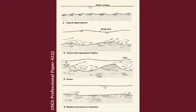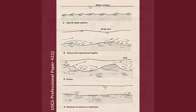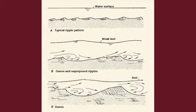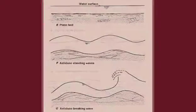In channel flow capable of moving its own bed, the flow interacts with the boundary, producing a type of bed roughness — for example, ripples, dunes, or plain bed.